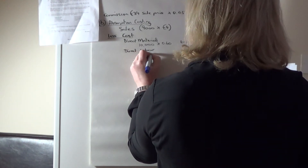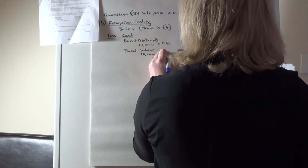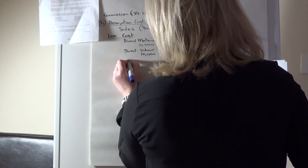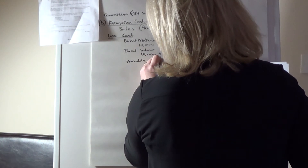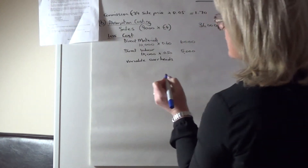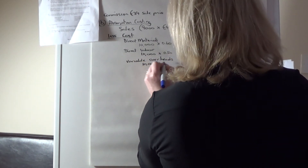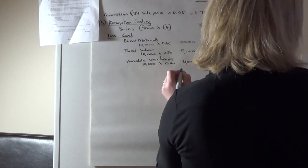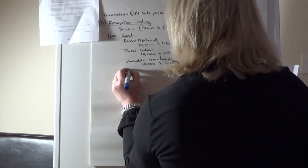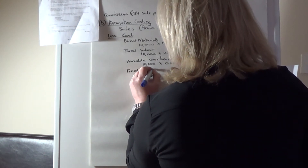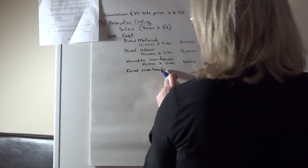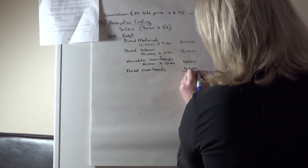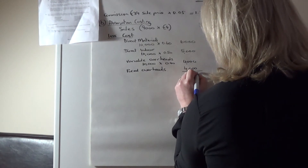Direct labour is 10,000 units at 0.50 per unit, giving 5,000. Variable overheads are 10,000 units at 0.40 per unit, giving 4,000. In absorption costing we also include fixed overheads directly in the costing, adding another 4,000. That brings total production cost to 19,000.